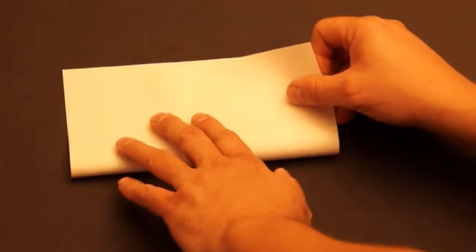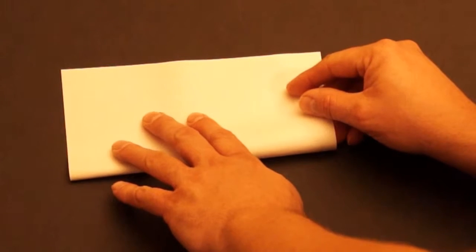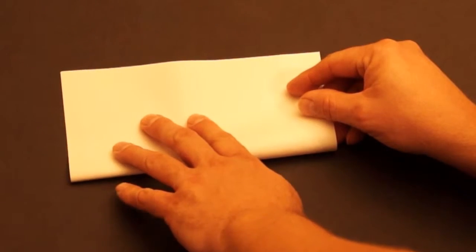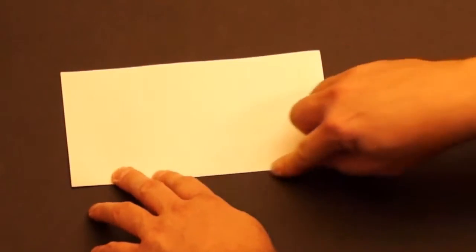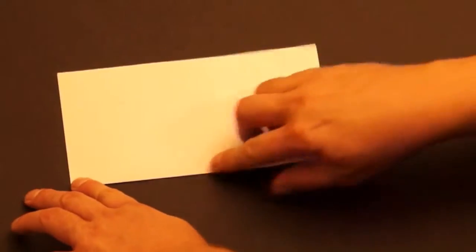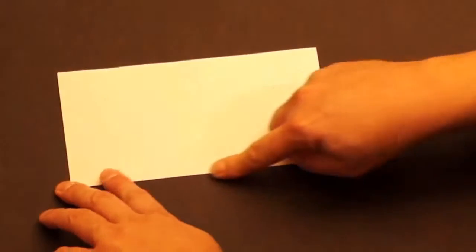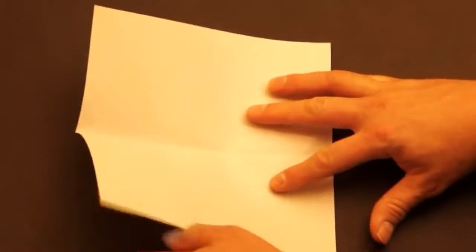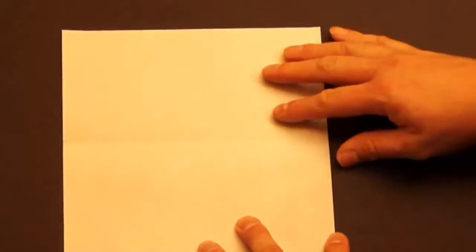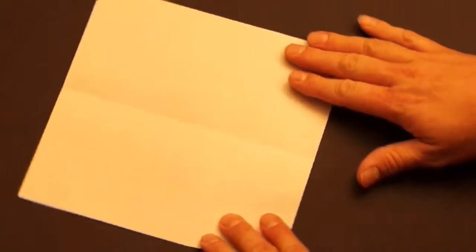Okay, we start with a square piece of paper. Fold the bottom to the top, try to line it up the best you can. Press good on the fold, open it up. Then we turn the paper so that the crease is vertical.